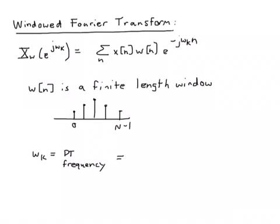A windowed Fourier transform is defined here. I'm calling the output of that transform X_w of e to the j omega k, where omega k is the frequency we're evaluating the transform at. We compute that by simply multiplying the time signal x of n that we want to take the transform of by a window, and then taking a standard discrete time Fourier transform.